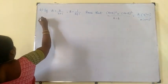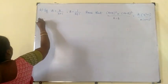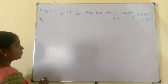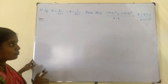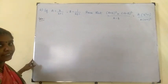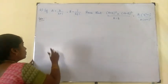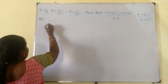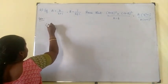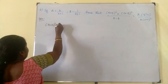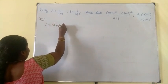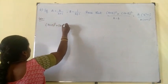First of all, solve the numerator and denominator separately. The first part of the numerator is a plus b the whole square plus a minus b the whole square.